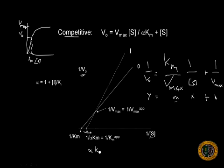And apparent means the apparent Km value for the inhibitor. So this would be the apparent Km. This would be the Km.